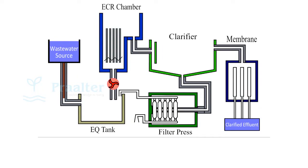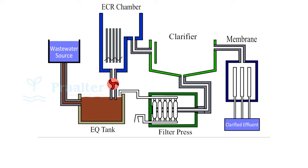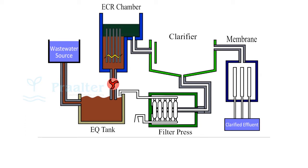As the water leaves the EC system, it enters the secondary separation tank. Here the effect of the EC reaction is further accelerated. The flocs generated in the EC system react with each other and form into larger flocs that settle out separately in the water column.